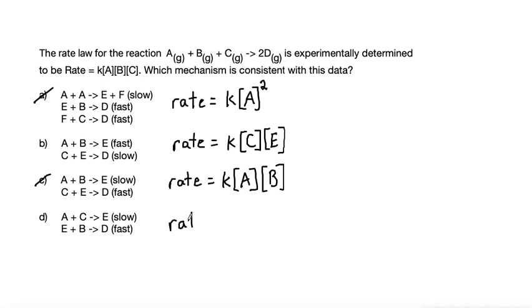Option D would have the rate law, rate is equal to some constant K, and the slow step here has reactants of A and C, only one each. So that would be concentration A times concentration C. So again, that's not A, B, and C. So we can go ahead and mark out D. We know that the answer is B, but let's figure out how do we actually get A, B, and C.